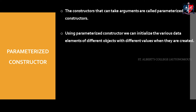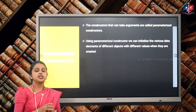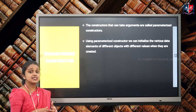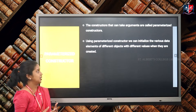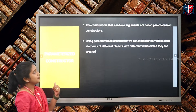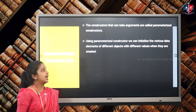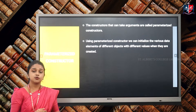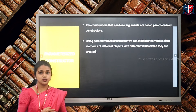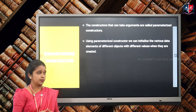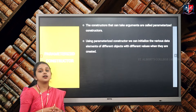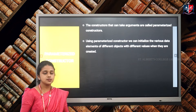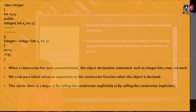Next, we have the second type of constructor: the parameterized constructor. The default constructor accepts no parameter, but in a parameterized constructor, as its name implies, it accepts arguments and parameters. Hence it is called a parameterized constructor. Using a parameterized constructor, we can initialize the data members of different objects with different values, whereas in the default constructor, data members are initialized to 0.